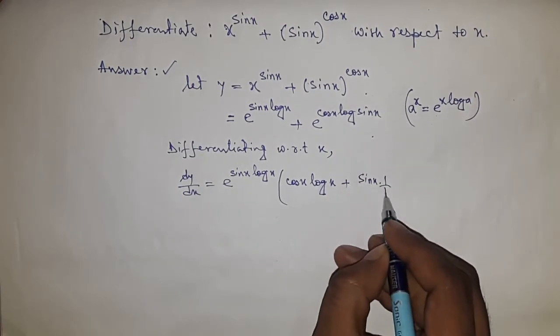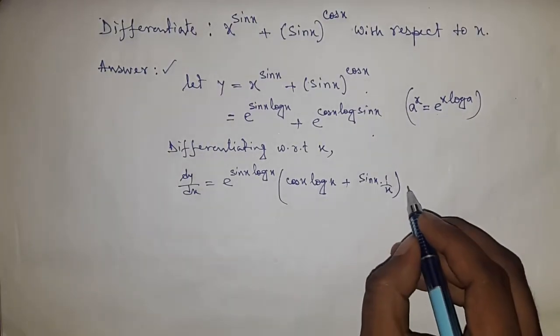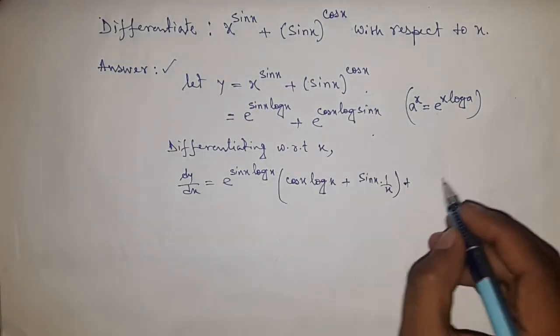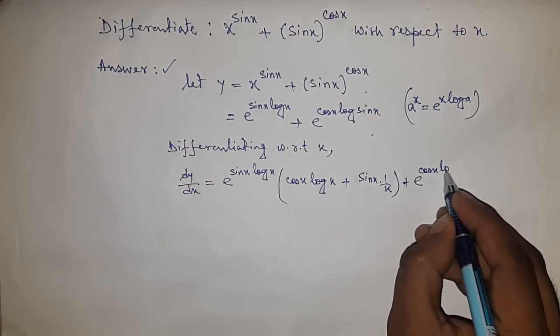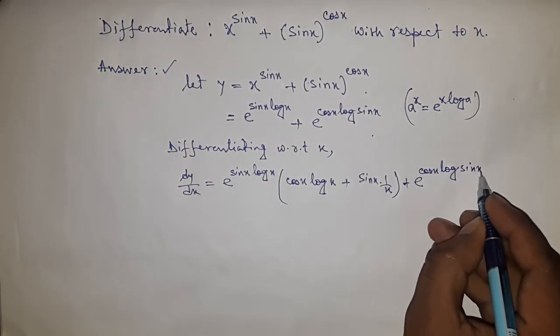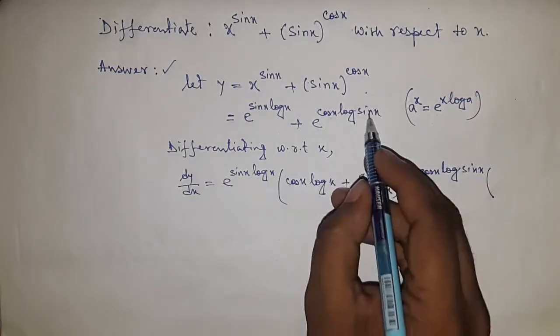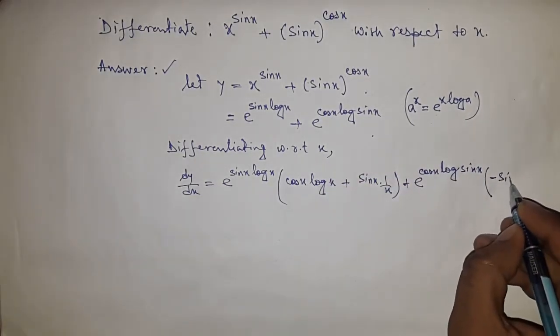So sine x into 1 by x. Similarly, derivative of e to the power x equals the same, so e to the power cos x log sine x, and two functions, so derivative of cos x equals minus sine x.